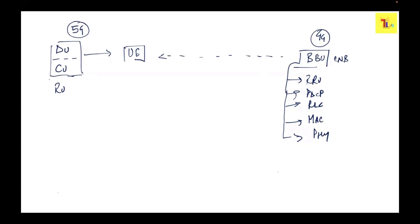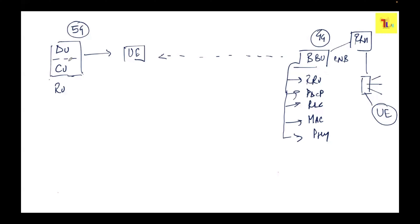We also used to have an RRH or radio unit connected with an RF antenna, and that RF antenna radiated signals towards the UE, which is your mobile. The concept is the same now, but we bring in virtualization. The CU looks into RRC, SDAP — which is a new stack layer in 5G — and PDCP.